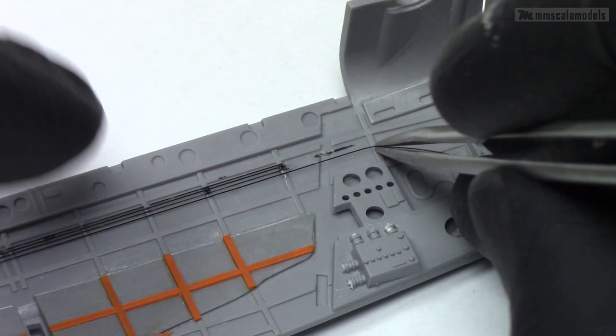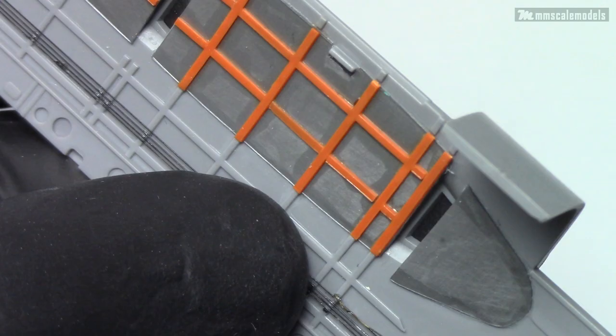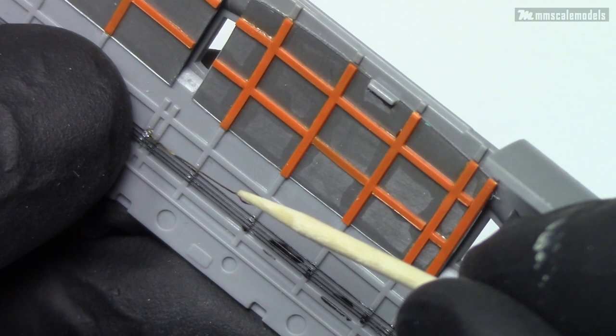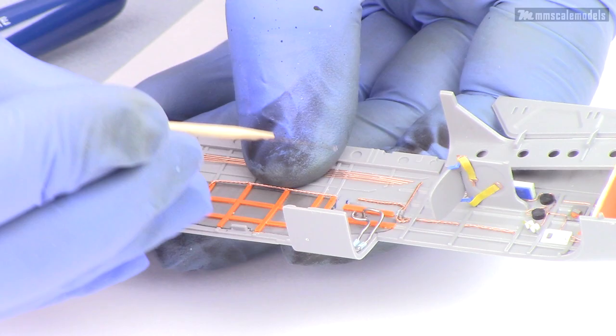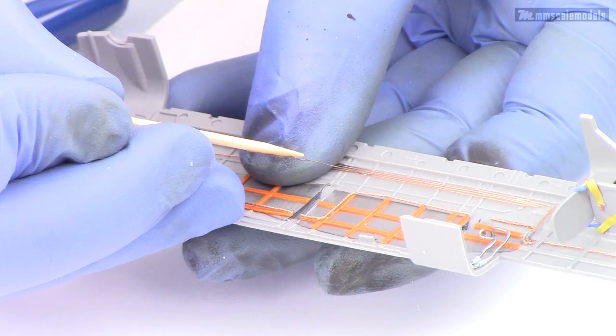On the starboard side I made the control cables from thin copper wire as an experiment to see which material is better. And the fishing line turned out to be much better choice. The copper wire is just too easy to kink, bend or otherwise damage.